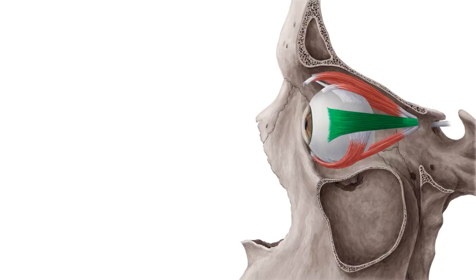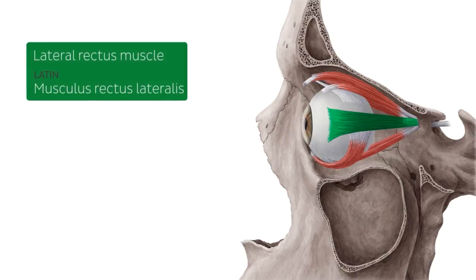The lateral rectus muscle is one of the six extraocular muscles, which are extrinsic muscles lying on the outside surface of the eyeball. The extraocular muscles control eye movements.